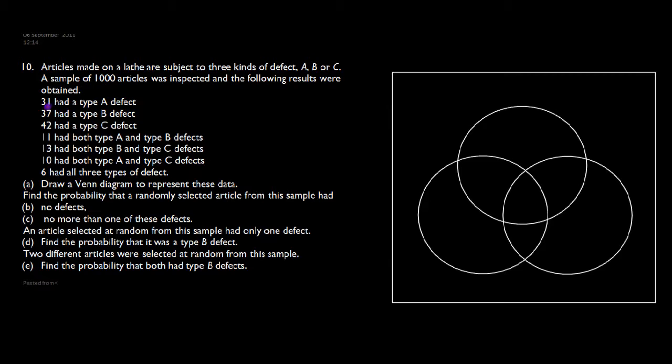We found in a sample of 1000 there were 31 with type A, 37 with type B, 42 with type C, 11 having both A and B, 13 both B and C, 10 with both A and C, and 6 with all three types of defect.